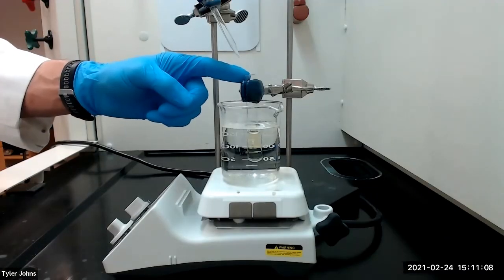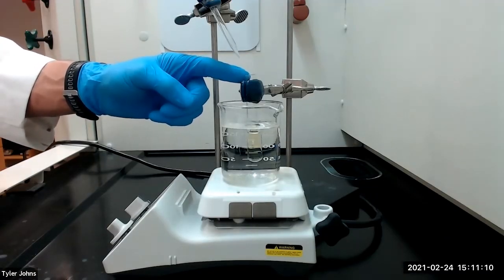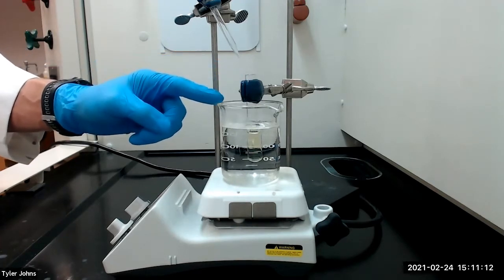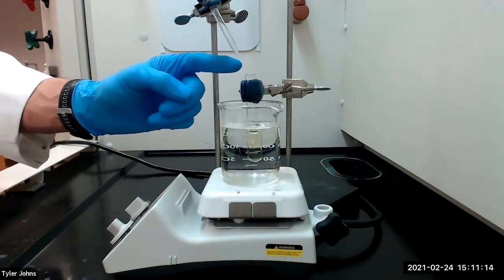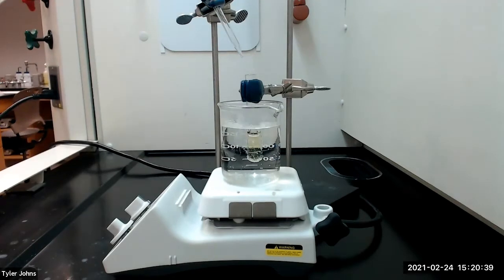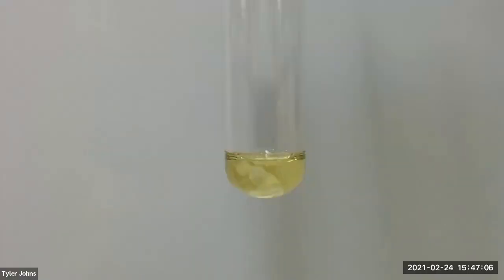We will next evaporate the acetone solvent by carefully heating the test tube in a hot water bath while directing a stream of air into the tube. Once the acetone has evaporated, you may be left with an oily solid in the bottom of the test tube. If this is the case, you need to scratch the oily product with a spatula to induce crystallization.